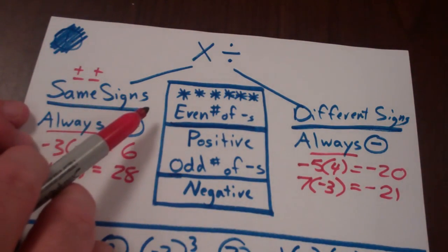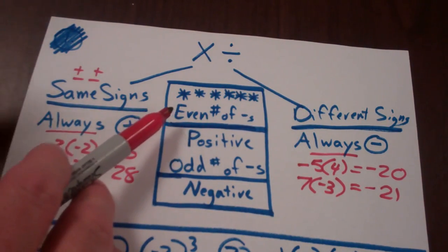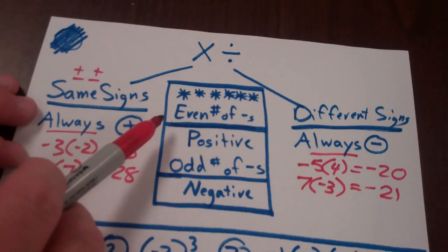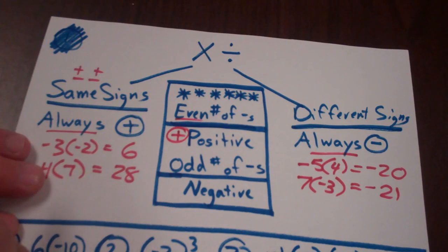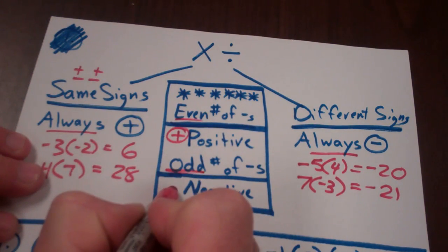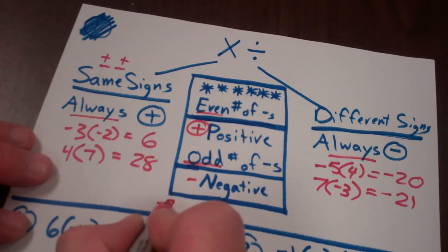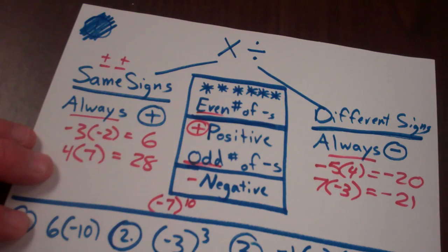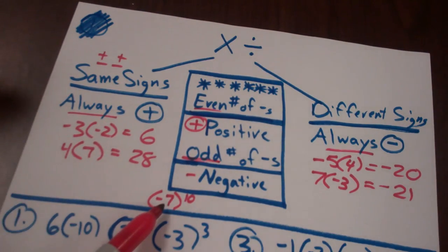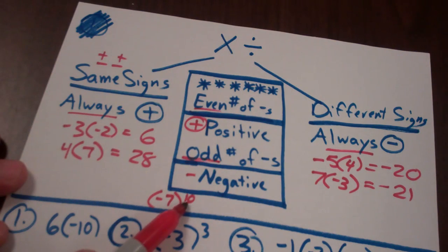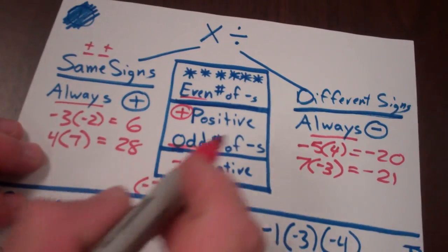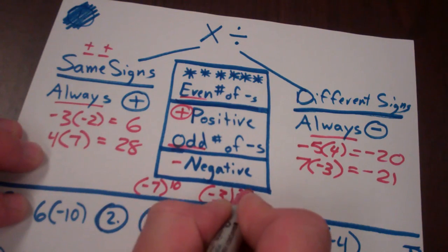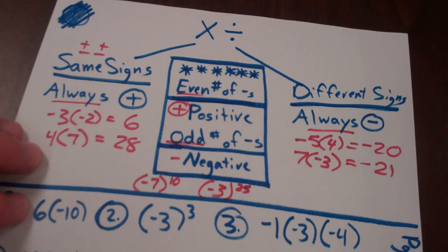I also like this rule: if you have all multiplication or all division with no addition or subtraction, you can simply count the number of negatives. An even number of negatives makes the answer positive, and an odd number of negatives makes it negative. For example, negative seven to the tenth power means ten negative sevens multiplied together — ten is even, so the answer is positive. But negative seven to the twenty-fifth power: twenty-five is odd, so the answer is negative.